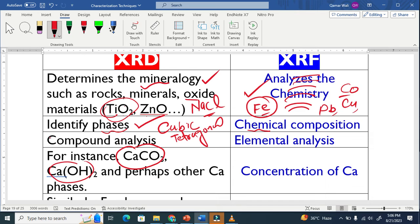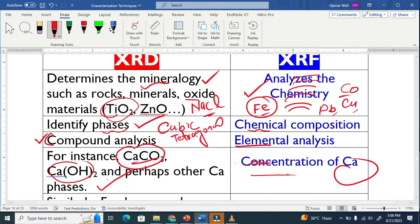XRD basically analyzes compounds, like I explained, while XRF analyzes elements. For example, calcium carbonate, calcium hydroxide, and perhaps some other calcium phases. XRF will only tell about the calcium concentration here, the quantitative percentage.